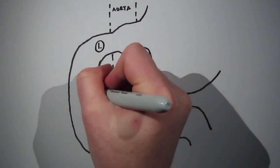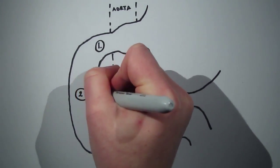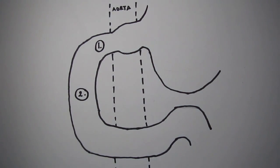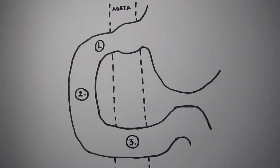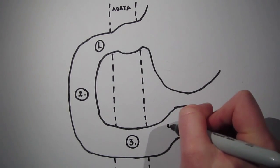The first or superior part at the level of L1, the second or descending part at the level of L2, the third or inferior part at L3, and the fourth or ascending part at L2.